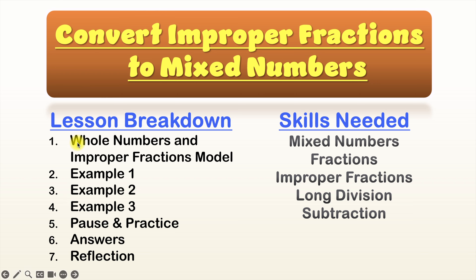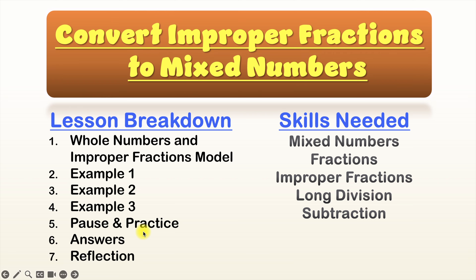First, we'll start with a brief model of whole numbers and improper fractions to have a general understanding of why this works. But if you want to learn just about how to actually convert from improper fractions into mixed numbers, I recommend starting with example one. Because examples one, two, and three give you a step-by-step process of how to do it. After those three examples, we'll have the pause and practice where you'll get a chance to try some questions of your own.